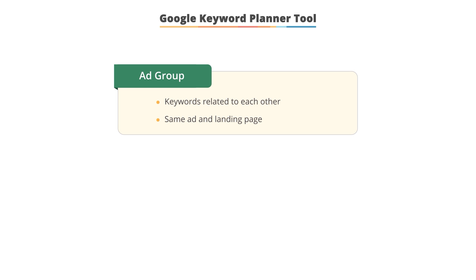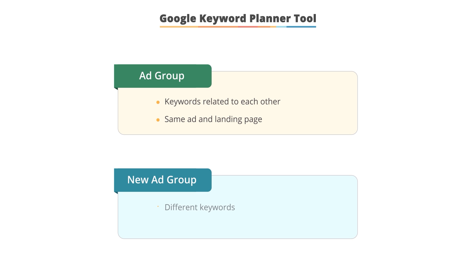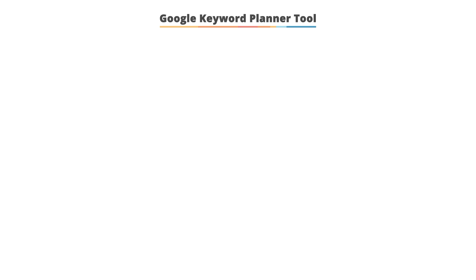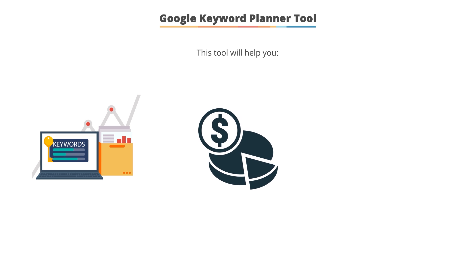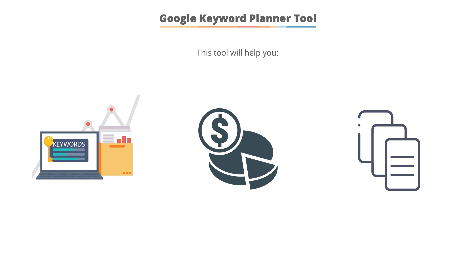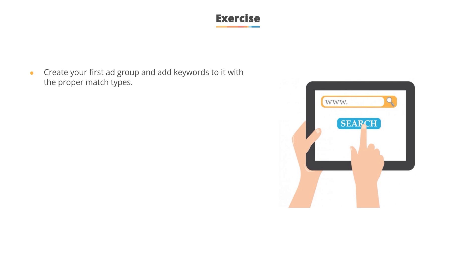As you use the keyword research tool to conduct your research, save keywords to different ad groups based upon the keywords being highly related to each other and able to share the same ad and landing page. If you look at the ad and landing page and it doesn't accurately describe the keyword, create a new ad group and move the keyword there so you can have more relevant ads. Spending time in the tool will really help you plan your ad groups and campaigns, see the overall keyword potential, plan budgets, and mass-create multiple ad groups at once.